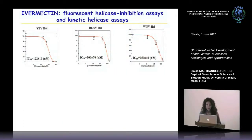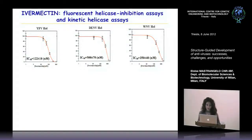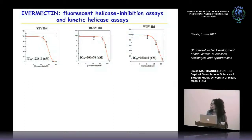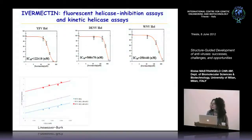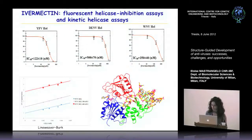We set up a fluorescent helicase inhibition assay to measure the IC50 of ivermectin using helicases of different Flaviviruses — yellow fever, dengue virus, and West Nile virus. The IC50 values obtained are in the nanomolar range, from 100 to 500 nanomolar. We also performed kinetic helicase assays to understand the mechanism of action and, in a Lineweaver-Burk plot, we observed an uncompetitive mechanism, meaning ivermectin can only bind the helicase domain when RNA is already bound.